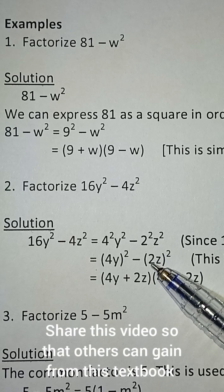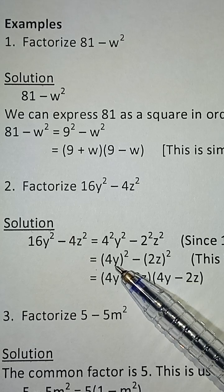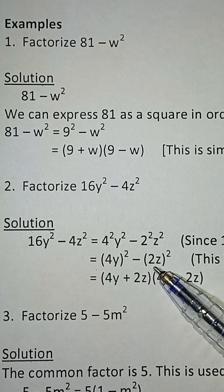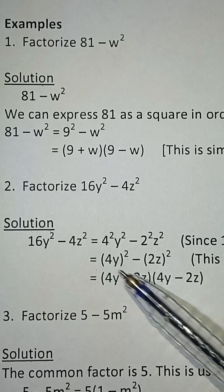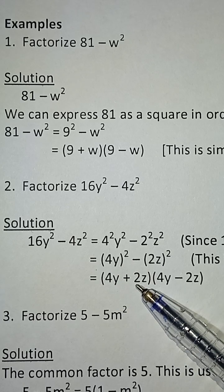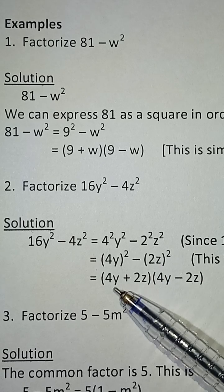If you look at this, this is a difference of two squares. As I've said before, the trick is to take the two numbers, add them and enclose in a bracket, and also take the two numbers, subtract them and enclose in a bracket. This is the final answer.